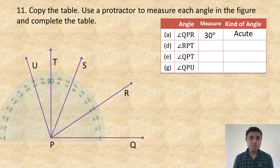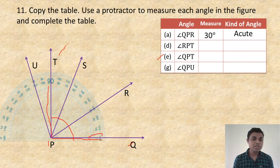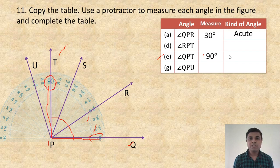Next, angle QPT: here is Q, here is P, here is T — this is the angle to measure. Place the protractor on ray PQ. Count: 0, 10, 20, 30 — here it is 90 degrees. So angle QPT is 90 degrees — that means a right angle.